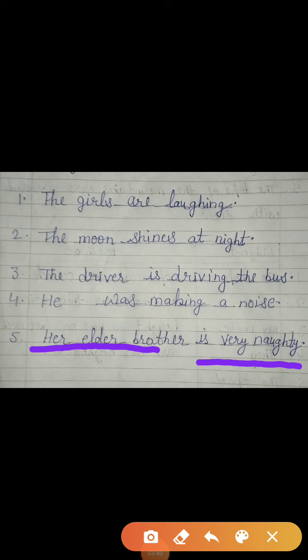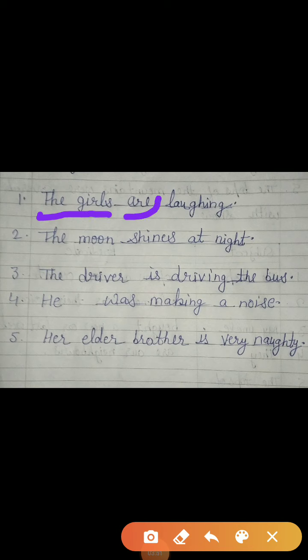And predicate refers to the verb. So dear student, look here. In the first sentence, your subject was the girls. And the predicate starts with a verb — are is a verb. Predicate starts with a verb, whether it is a helping verb or a main verb.